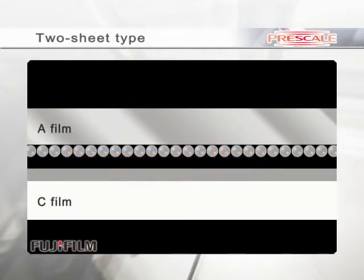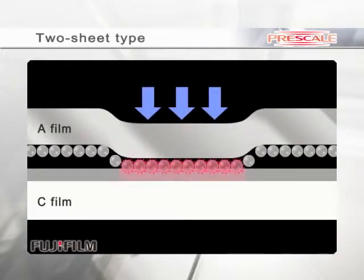When pressure is applied to the external surfaces of the sandwiched A and C-films, micro-capsules on the A-film are destroyed, which interact with the color-developing layer on the C-film. The color-developing layer changes its color to red chemically.